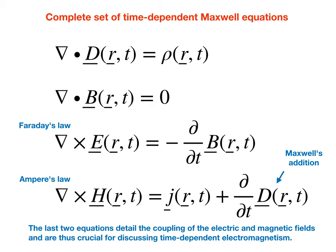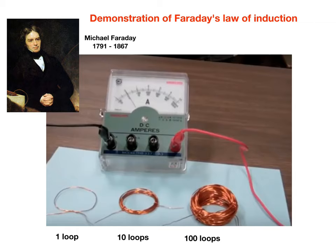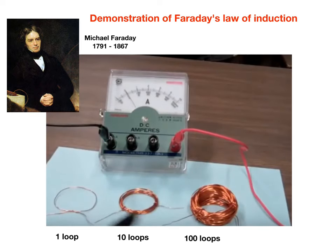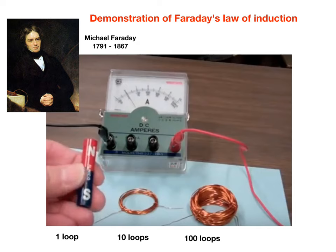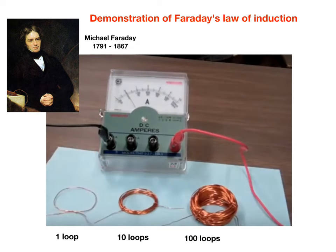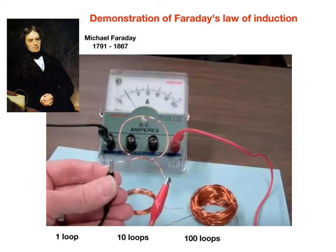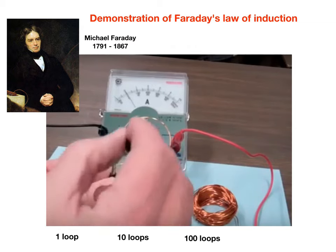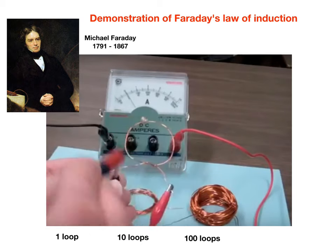The coupling of the electric and the magnetic field was discovered by Michael Faraday in 1831. Faraday's law of electromagnetic induction is demonstrated here using an ammeter and a one-loop coil of wire, a 10-loop coil of wire, and a 100-loop coil of wire. The coils are connected to the circuit, and then a bar magnet is pushed through and pulled out. It is apparent that the magnitude of the observed current depends on the number of loops — one loop gives a tiny current, 100 loops gives a large current. The magnitude also depends on the speed of the motion, because it is the change with time of the magnetic flux through the coil that determines the magnitude of this current.